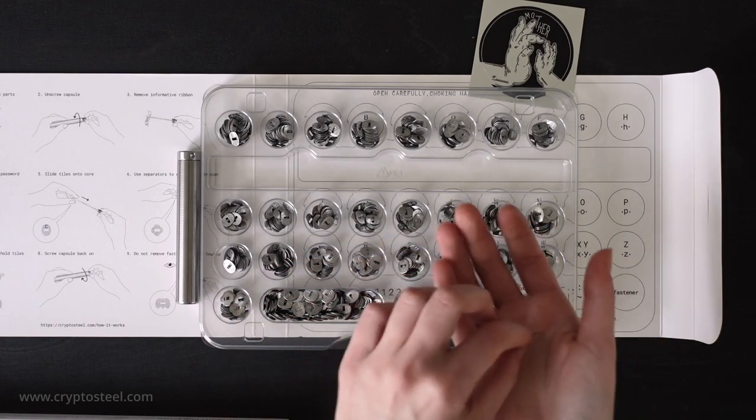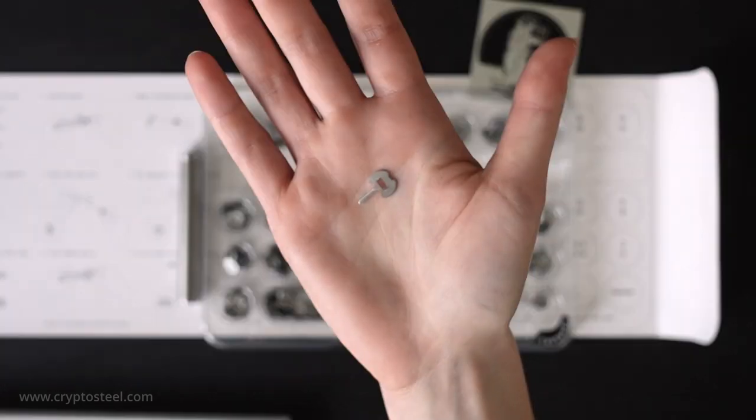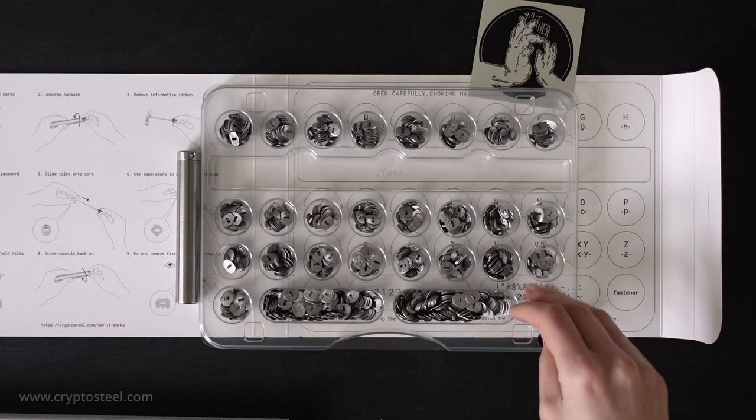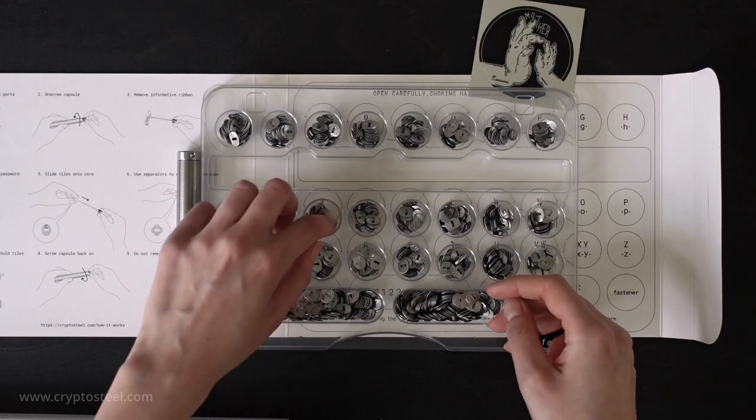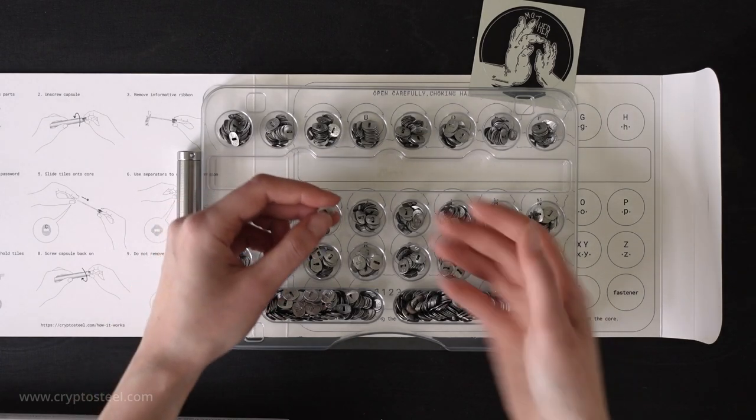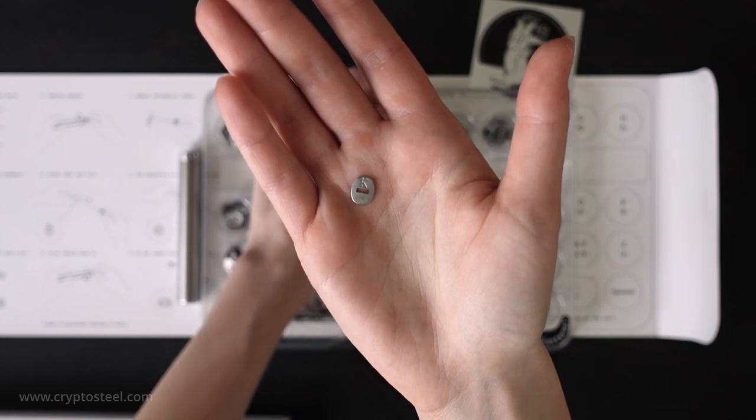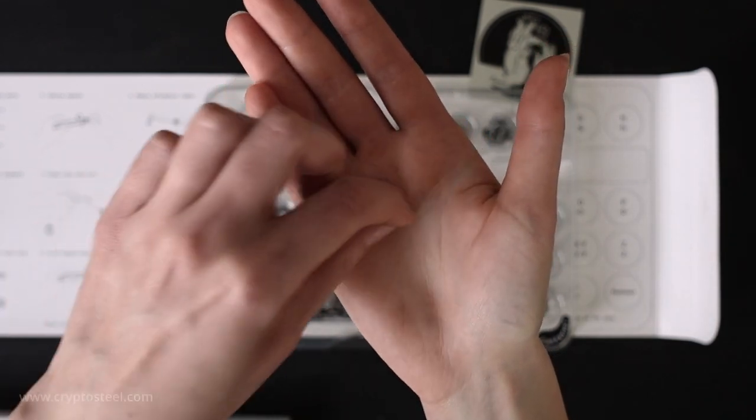This is a fastener, a metal element used to seal your recovery seed phrase once it is entered onto the capsule by threading character tiles onto the core. When combined, the CryptoSteel Capsule system provides highest-grade security and near-permanence to your sensitive data.